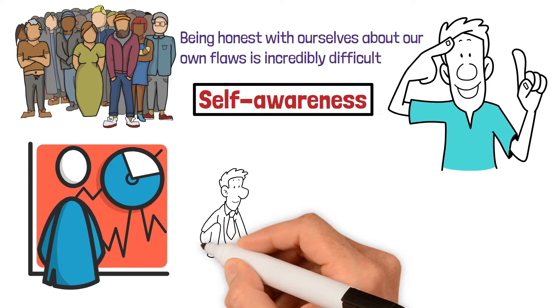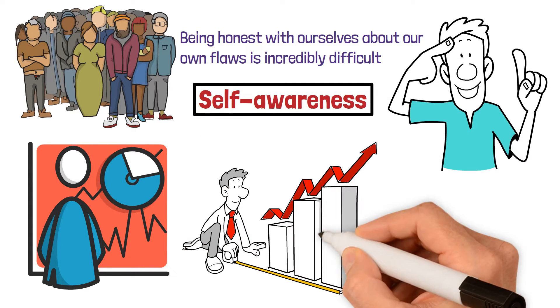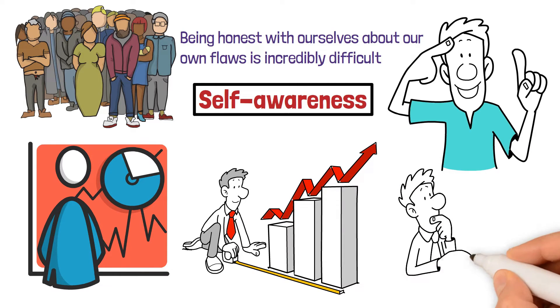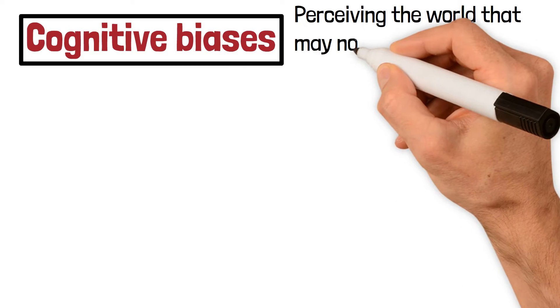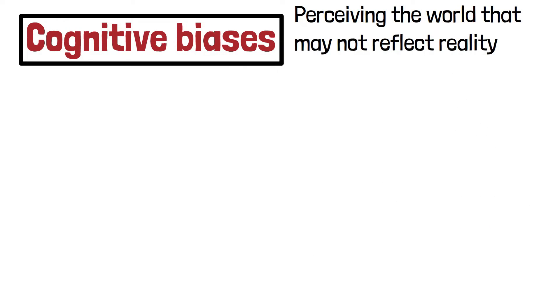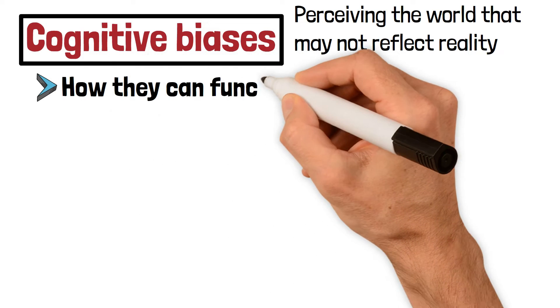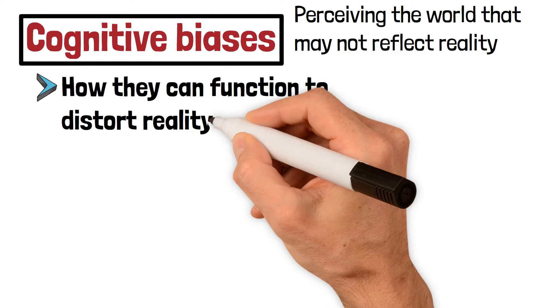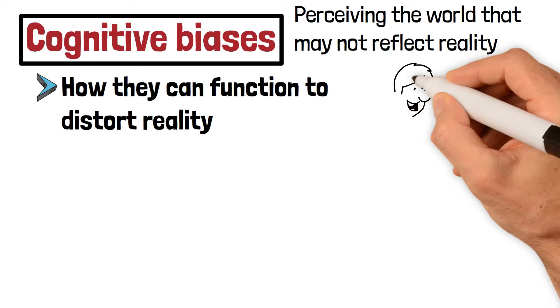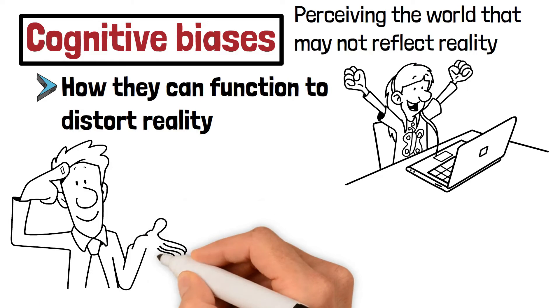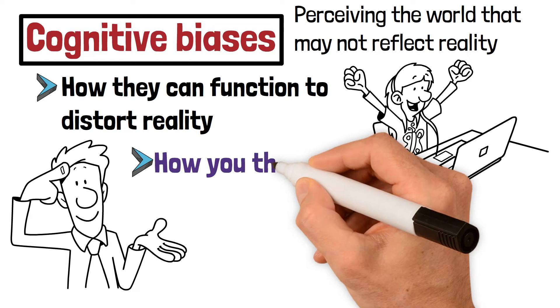This is because your success as an investor will, to a large extent, be determined by the patterns of thinking that you engage in. Cognitive biases represent ways of perceiving the world that may not reflect reality. As an investor, it is important for you to be aware of how they can function to distort reality. Moreover, recognizing their existence can enable you to become wiser, allowing you to learn more about how you think and why you think in particular ways.